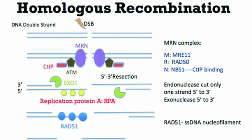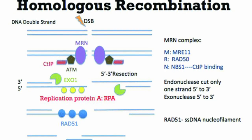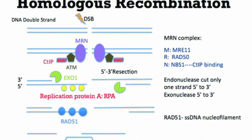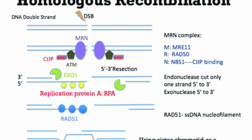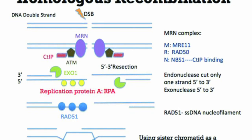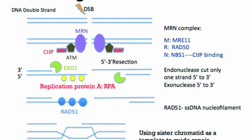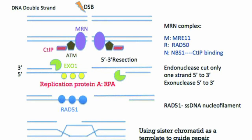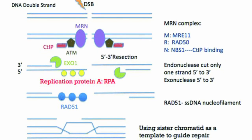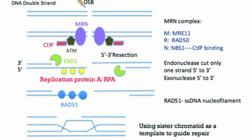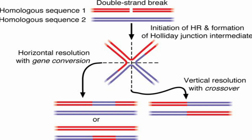Homologous recombination is initiated in response to double-stranded breaks in the DNA, known as DSBs, which can be caused by various factors including radiation, chemicals, replication errors, and aging. The cell recognizes the DSB and activates the DNA damage response. The broken DNA ends are processed to create 3-end single-stranded DNA (ssDNA) overhangs, which are coated with a protein called RAD51. These overhangs are used to search for homologous or nearly identical DNA sequences on a sister chromatid or homologous chromosome. The free-end overhang invades the homologous sequence, forming a D-loop structure, and DNA polymerase synthesizes a new DNA strand using the invaded sequence as a template — a process called DNA strand exchange — restoring a continuous DNA double helix.